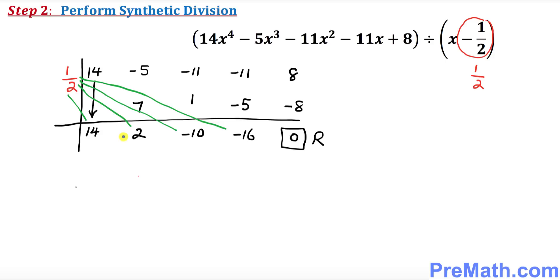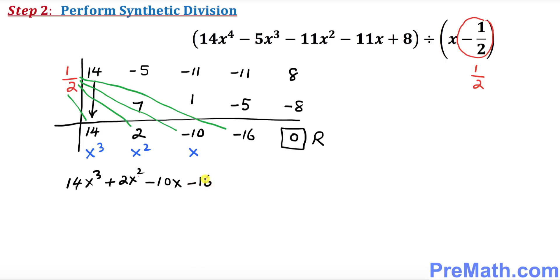So what we have now: 14 corresponds to x cubed, 2 corresponds to x squared, negative 10 corresponds to x, and negative 16 is the constant. We can write this whole thing as 14x³ + 2x² − 10x − 16.